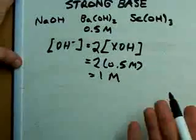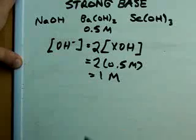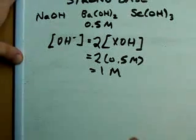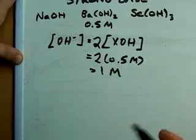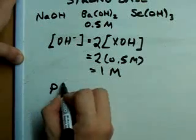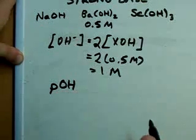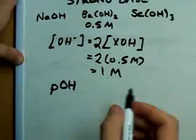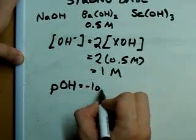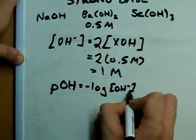Now, once you have the concentration of OH minus, there are several different ways you can get the pH from that. My preferred way is with something called POH, which is kind like the opposite of pH, in that it's the negative log of the OH minus concentration.